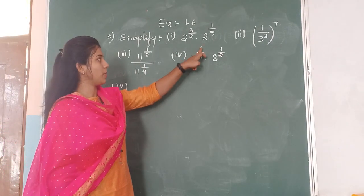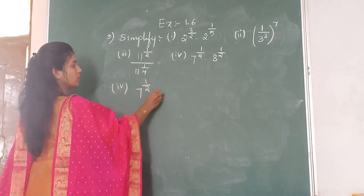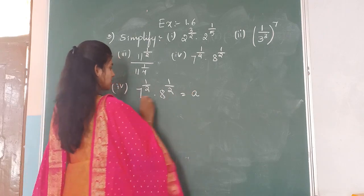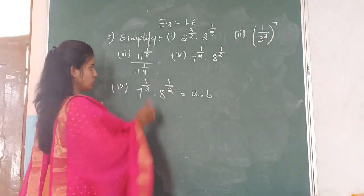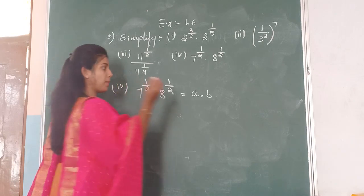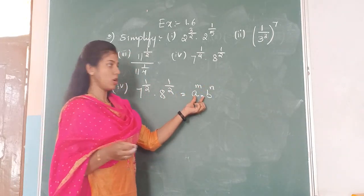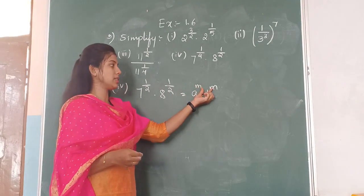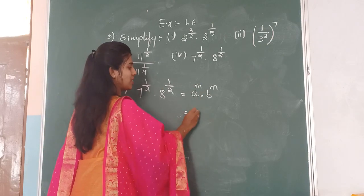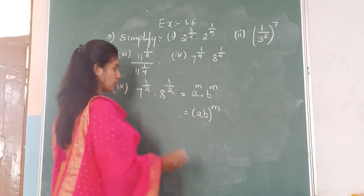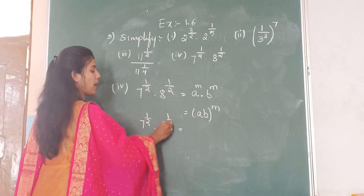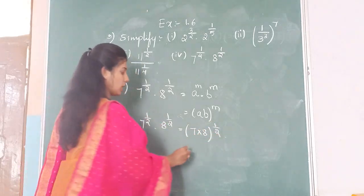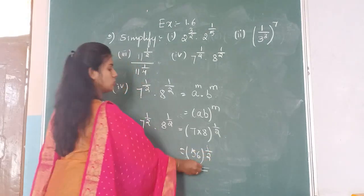The fourth one is 7 to the power of 1 by 2 into 8 to the power of 1 by 2. Observe the bases — 7 and 8 are different. The powers are the same: 1 by 2. So this is the fourth law: A to the power of M into B to the power of M equals A into B, whole raised to M. So we get 7 into 8, whole to the power of 1 by 2, which is 56 to the power of 1 by 2.